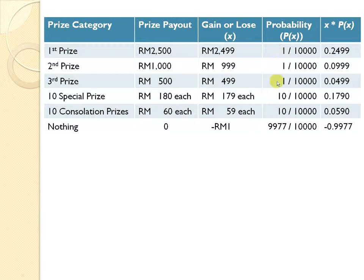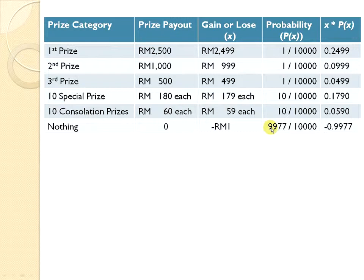The second prize probability is 1 over 10,000, third prize is 1 over 10,000, then special prize is 10 over 10,000, and consolation prize is also 10 over 10,000. There are 9,977 numbers that won't come out in any prize category, so the probability to lose RM1 is 9,977 over 10,000. We can then calculate x multiplied by P(x) for each row.